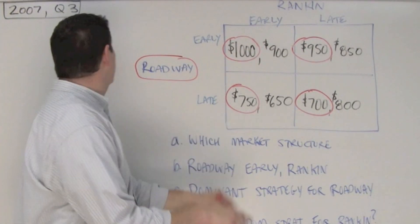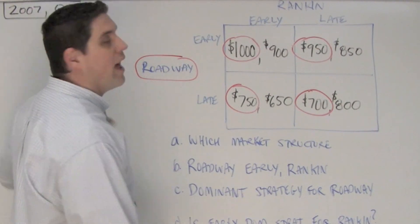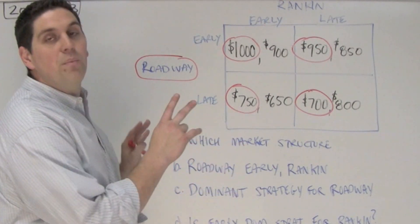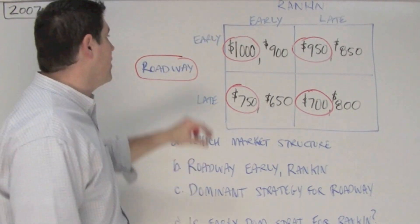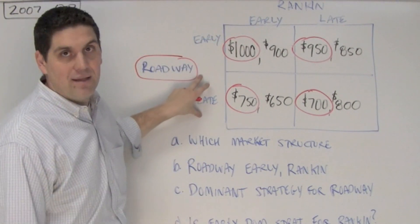Now here's one of those classic game theory questions. It's question 3 from 2007. It gives you two competing bus companies, Roadway and Rankin, and they're trying to choose between either departing early or departing late.